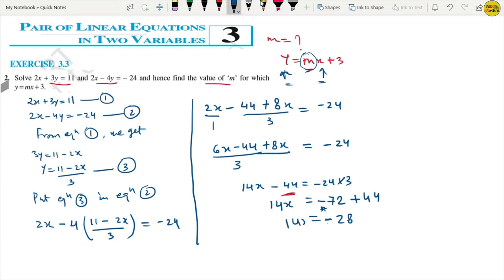How much is it? This is 14x. So x equals to minus 28 divided by 14. Cancel out, 14 goes into 28 twice. So how much is it? X is minus 2.